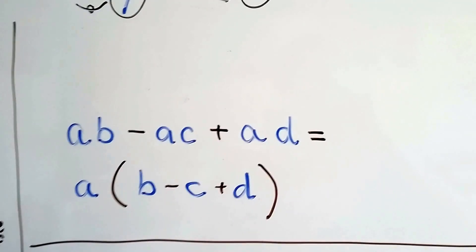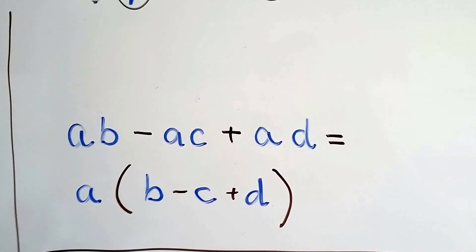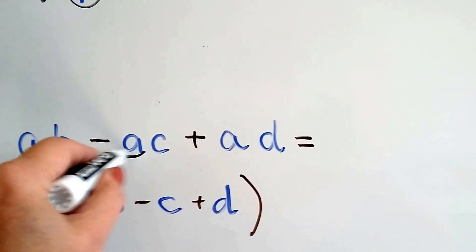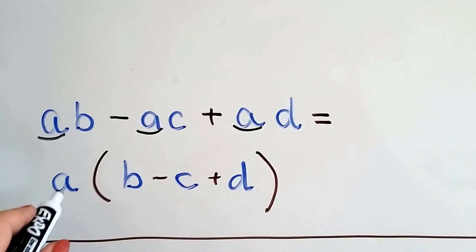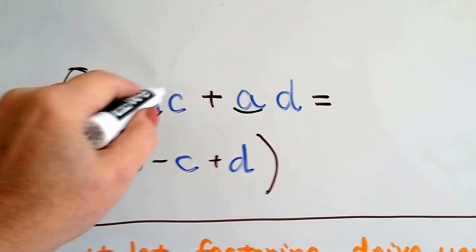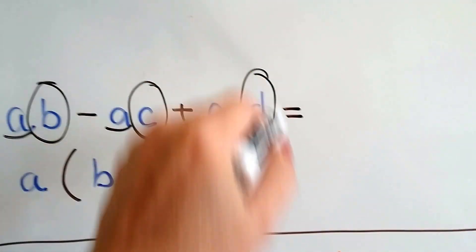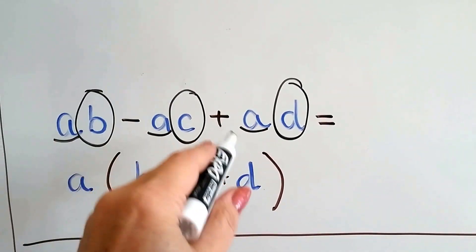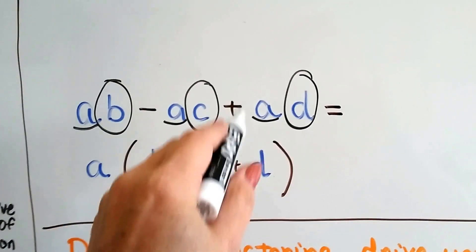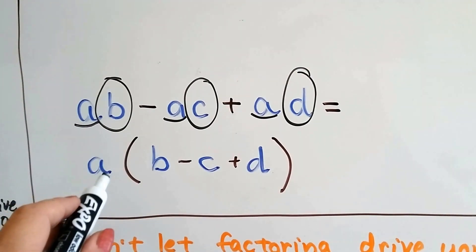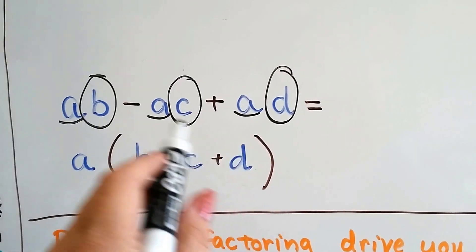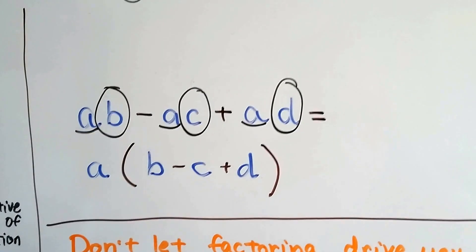Let's try this one. We've got ab minus ac plus ad. We can see that there's an a, an a, and an a. So that's what we put outside the parentheses. What's left is a b, a c, and a d. We put the plus and minus signs like they're supposed to be — we just drop them down. And we've got a on the outside with b minus c plus d.